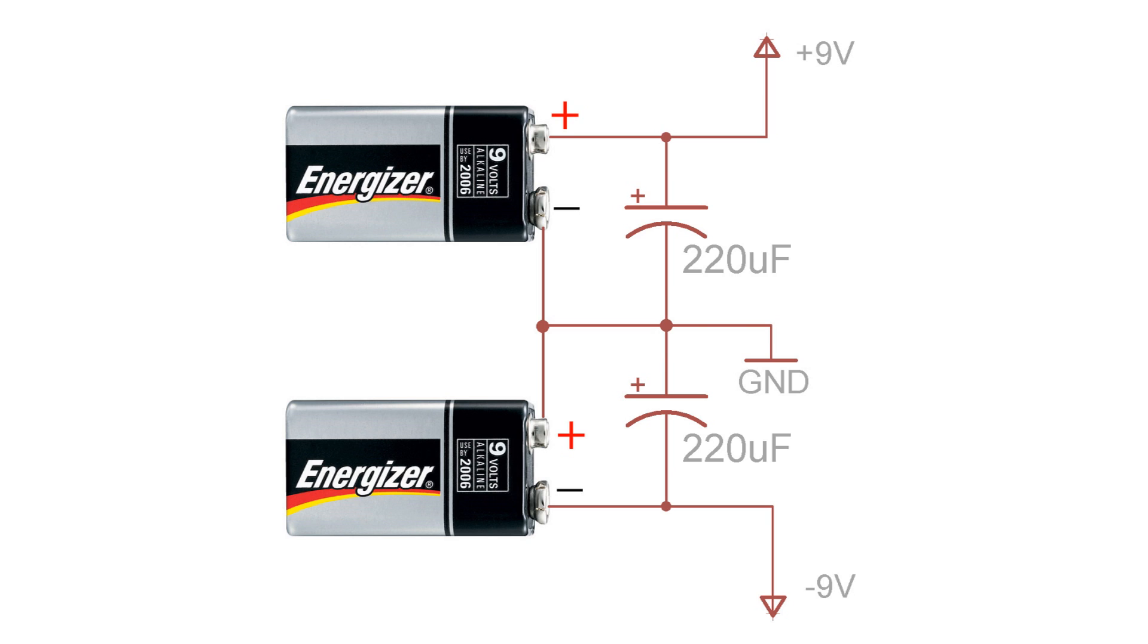While you are sorting out your supply voltages, make sure you put some capacitors on the power supply lines to smooth out the power. Also if you hook up two batteries in series like this and call the center terminal ground, you will get a really good positive and negative voltage supply for your op-amp.